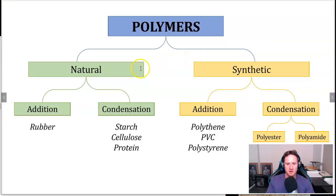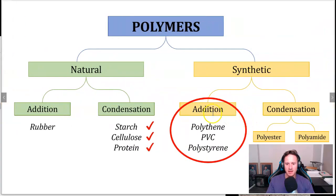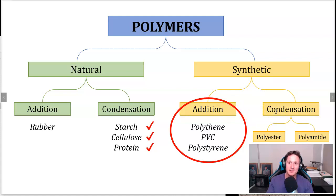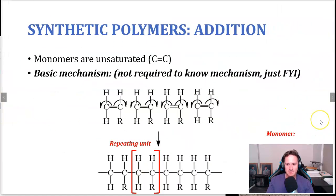Polymers come in natural and synthetic forms. Natural polymers like starch, cellulose, and protein were covered previously in the organic subtopic. Today we're looking at synthetic polymers, starting with addition polymers. Polyethene, PVC, and polystyrene are the examples we'll use. There are two different types of synthetic polymers — addition and condensation — so we need to know the difference between those reactions.